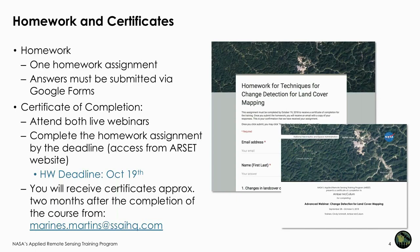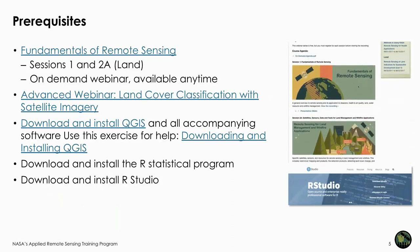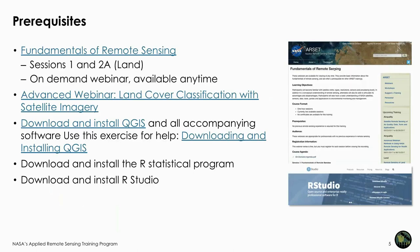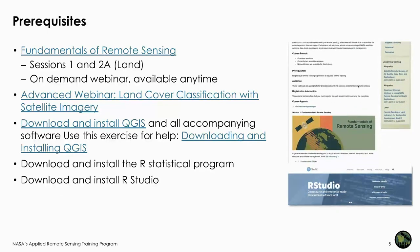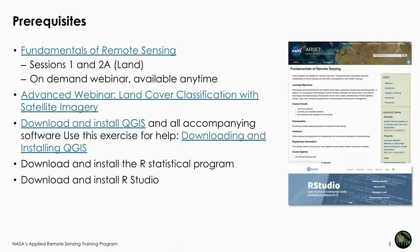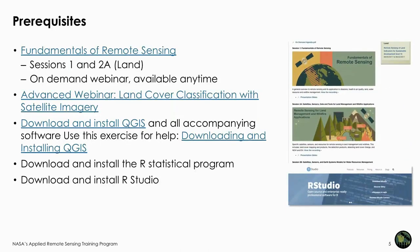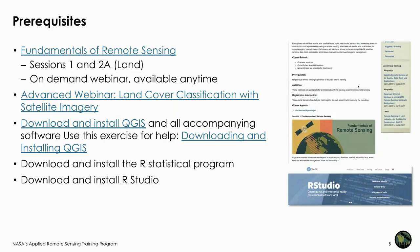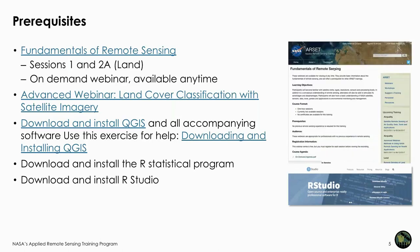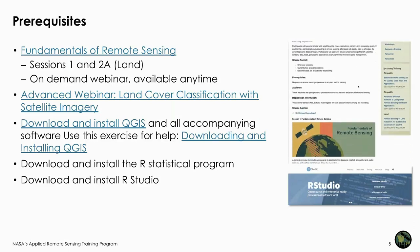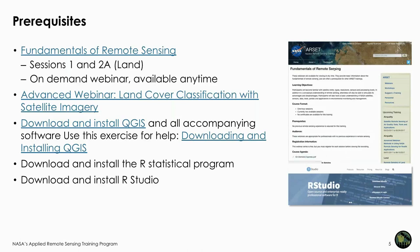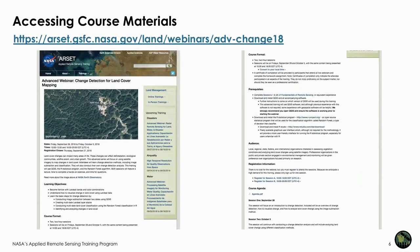You'll get the certificates about two months after the end of this course. There are several prerequisites: the first is Fundamentals of Remote Sensing, available on our website anytime, or equivalent experience from a course. We also advise taking the advanced webinar on land cover classification with satellite imagery, especially for this week's exercise. You must also download and install QGIS and all accompanying software, the R Statistical Program, and R Studio. To access course material, go to our website listed here.